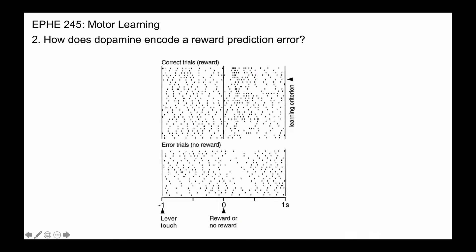In a subsequent study, Schultz and colleagues looked again at what happened to the firing rate of dopamine neurons following positive outcomes. So in this case, a correct trial, what they saw was an increase in firing rate similar to the study that we just talked about.